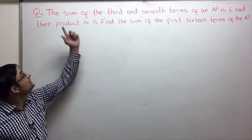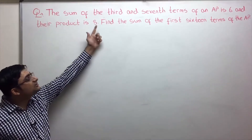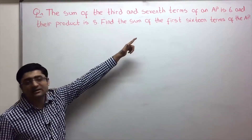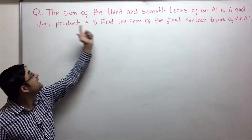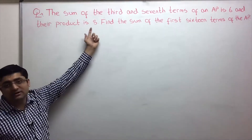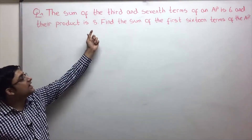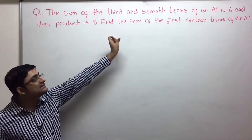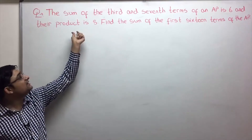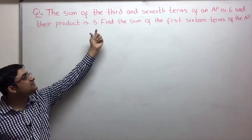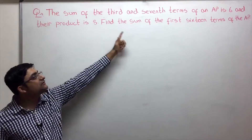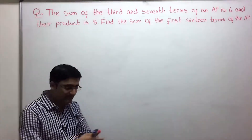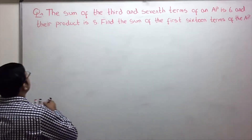Let's read the question. The sum of the third and seventh term of an AP is 6 and their product is 8. Based on this we have to find the sum of the first 16 terms of an AP. So let's begin.